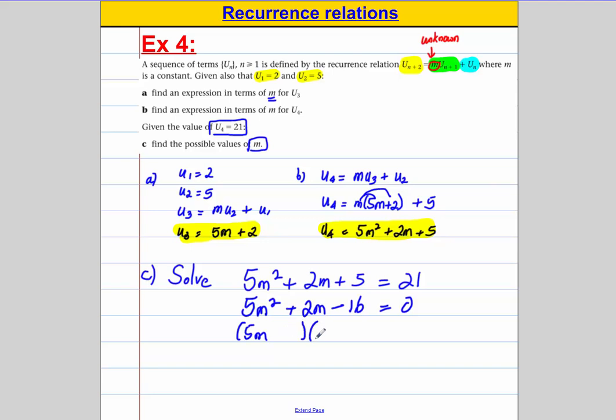It should be a 5m there and an m there equals 0. And can we think of a way to factorise this? So we're going to have plus 2, I think, and negative 8 should work. Because 5m multiplied by m is 5m squared, negative 8 multiplied by 2 is negative 16. 5m times 2 is 10m, negative 8 times m is negative 8m, so that would give me positive 2m.